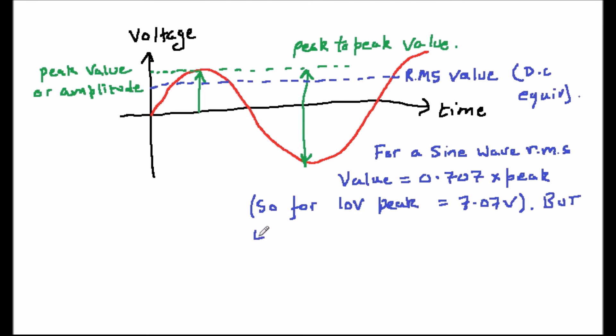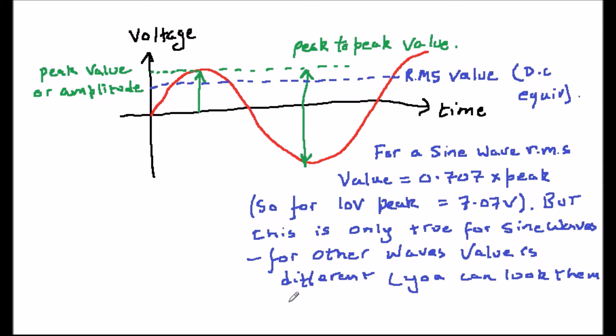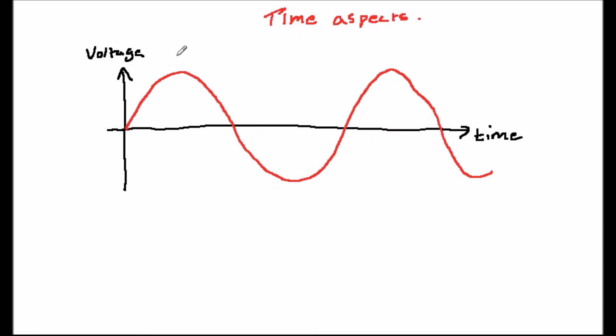For a sine wave, the RMS value is given by 0.707 times the peak value. And for the AC mains this is 230 volts. And so that is the origin of the 230 volts AC mains that you normally hear about in the UK.